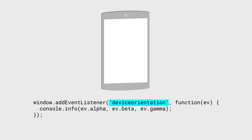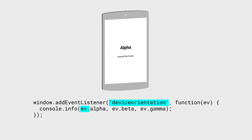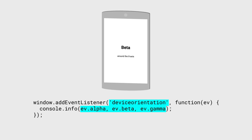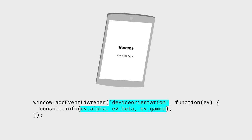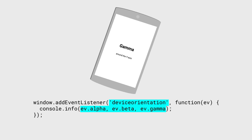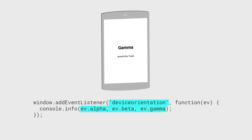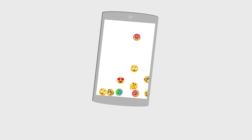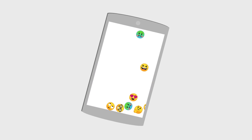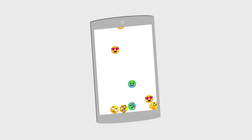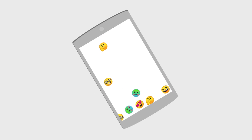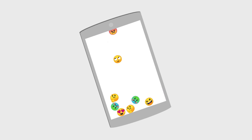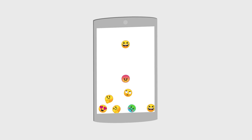It gives us three values: alpha, beta, and gamma. For this game, we care about the gamma property, as it represents side-to-side motion. Check out my article to find out more about the different axes.